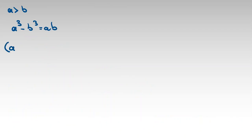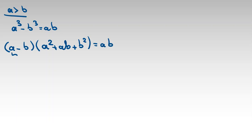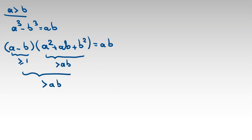In case 3 we know a is greater than b, and a cubed minus b cubed is (a minus b)(a squared plus ab plus b squared) equal to ab. Because a is greater than b, we can say a minus b is greater than or equal to 1. Since a and b are positive, a squared plus ab plus b squared is greater than ab. So the left-hand side is greater than ab, but we know it should equal ab — contradiction.